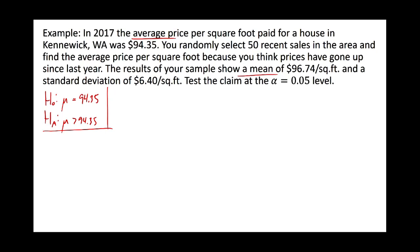Suppose you went out and got 50 values and your sample mean was $96.74 with a standard deviation of around $6. You could calculate those statistics if given the 50 values. The question is: is that enough evidence at the 0.05 level to say prices have actually gone up?